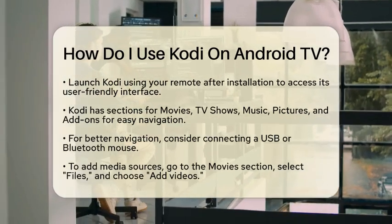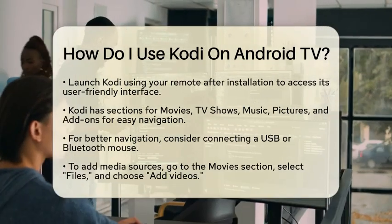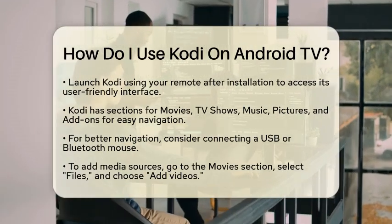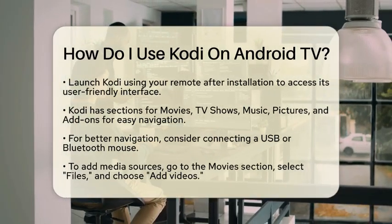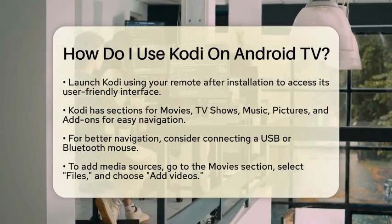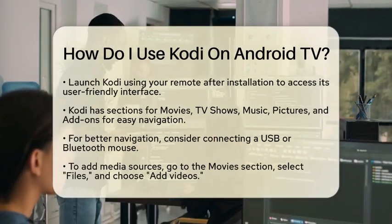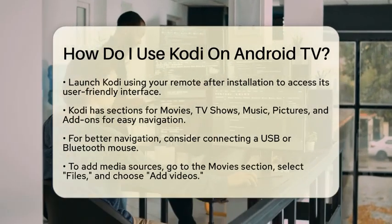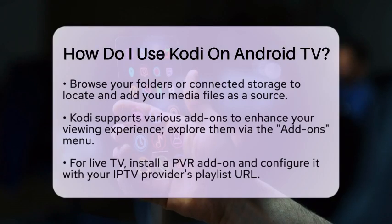Next, you will want to add your media sources. To do this, navigate to the relevant category, such as movies. Select Files, then choose Add Videos. Browse through your folders on your Android television or any connected storage devices to locate your media files. Once you find the folder, add it as a source. Kodi will automatically scan and organize your media library for you.